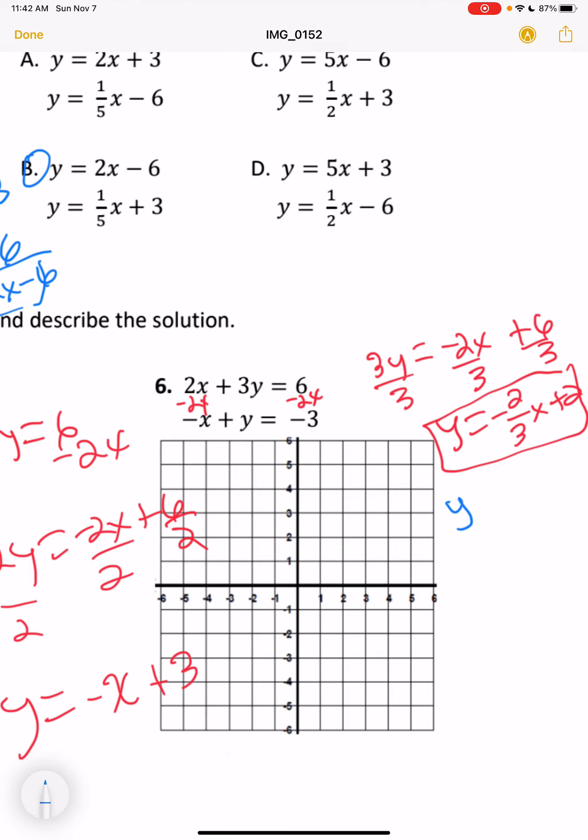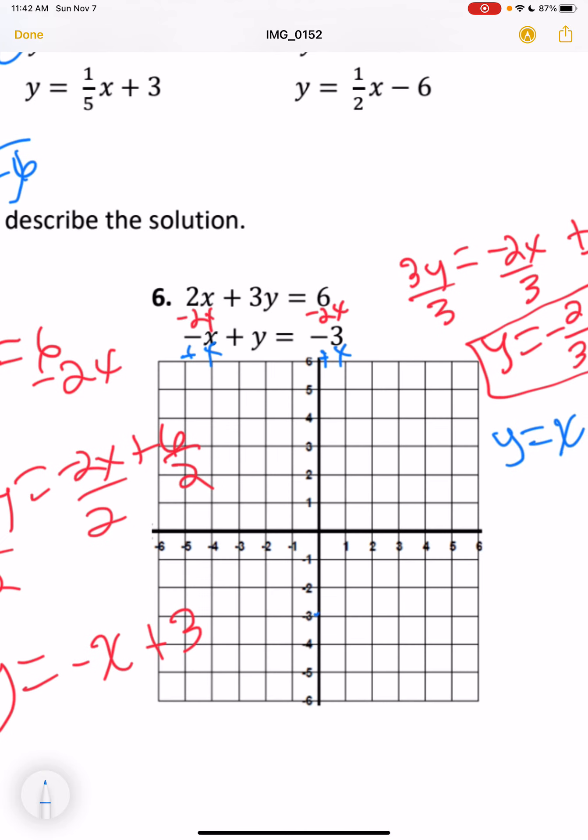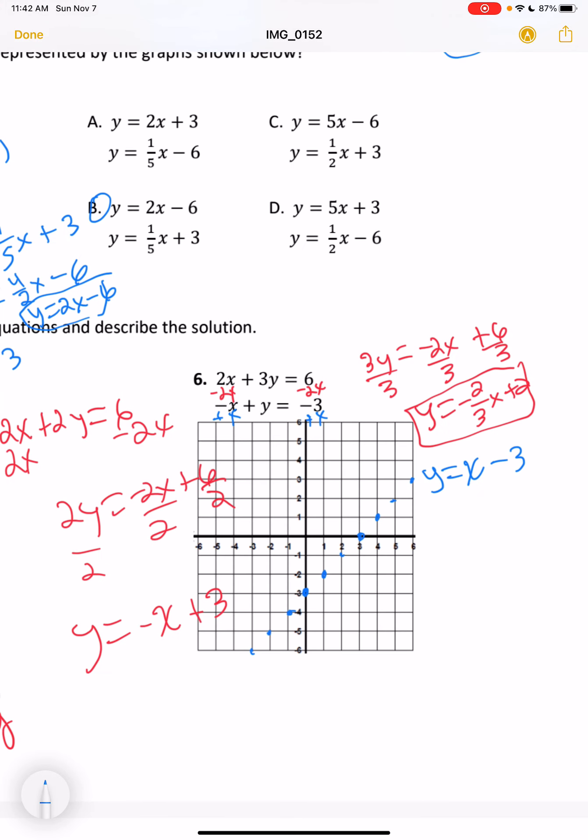And then our second one, we would just have to add x to both sides. So we get y equals x minus 3. So it would go up 1, over 1 for the second equation.